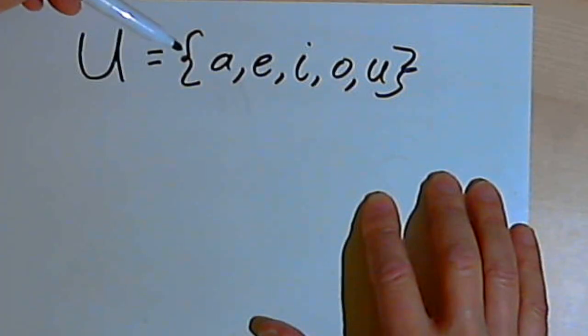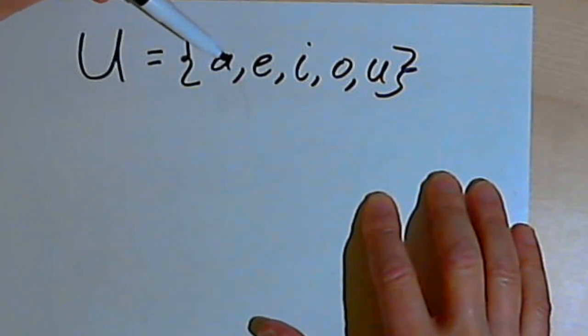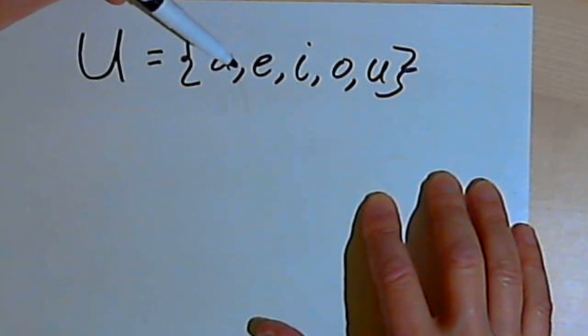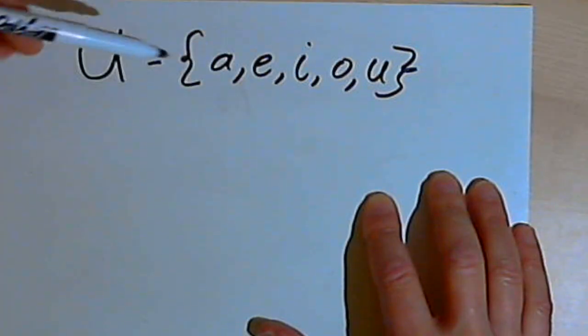Let's say I've got a situation where I'm talking about the vowels in the English language, the letters A, E, I, O, and U. And all I'm going to be talking about is those vowels, nothing else. I can say that's the universe that I'm going to be talking about, and I'll call those letters my universal set.